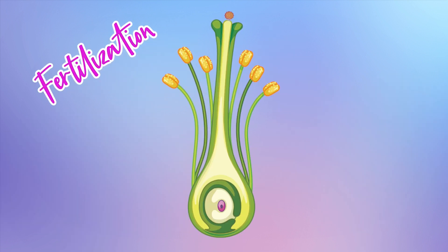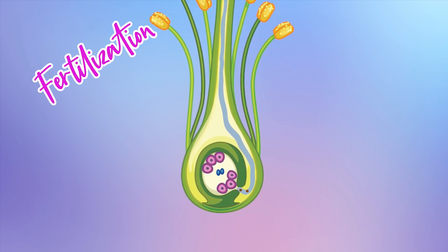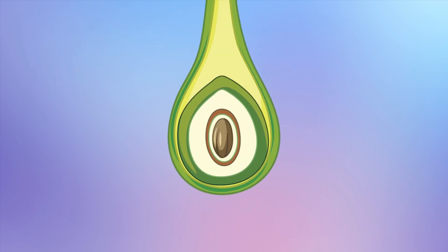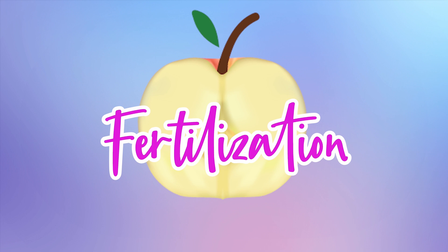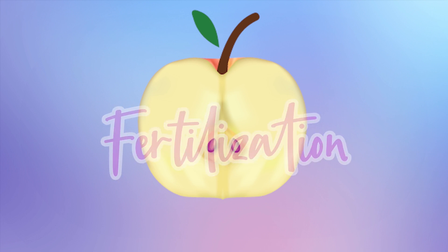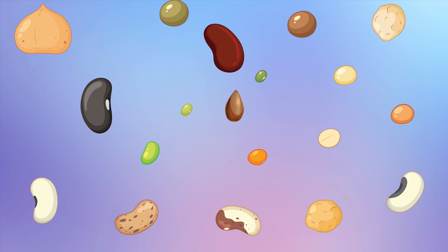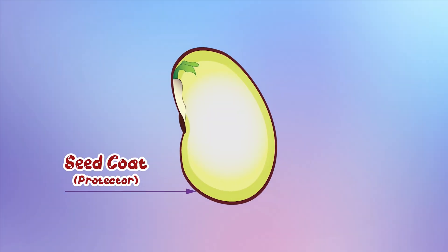Now fertilization. Pollen creates a pollen tube and reaches the ovaries, and the fertilization process is done. And we get fruit and seed. The seed can be of different sizes or shapes. It has a seed coat, which protects the seed.